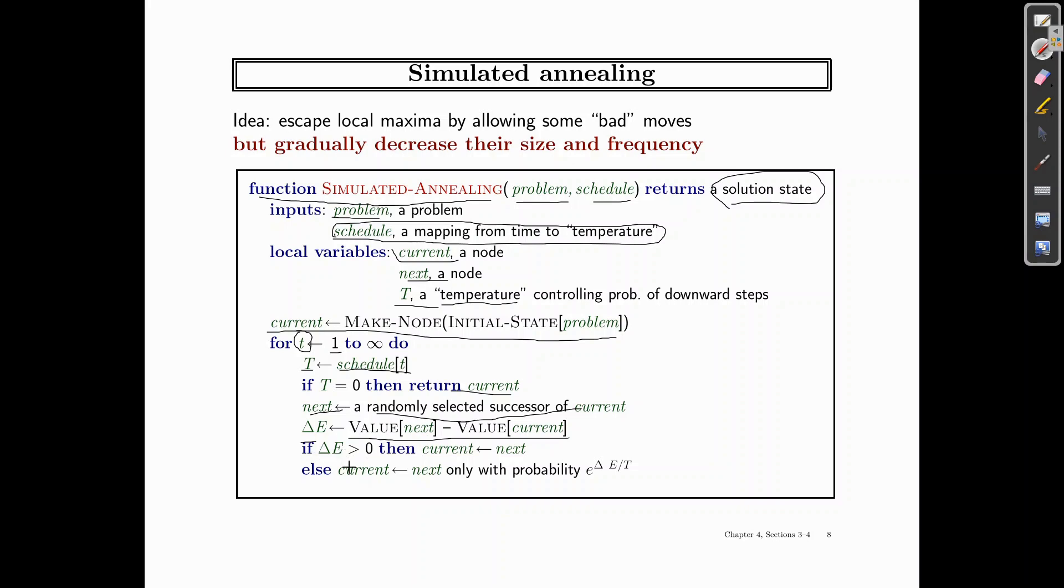So if delta E is greater than zero, then current is assigned the next. Otherwise, current will be next only with a probability. So here is the random walk feature. So we've got E raised to power delta E, which we found over here, divided by T, which is from the schedule.